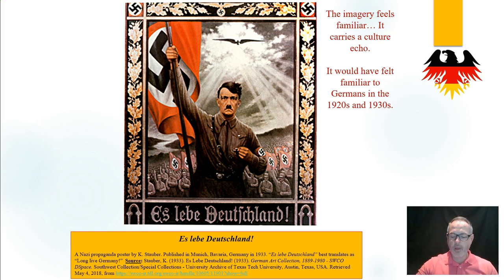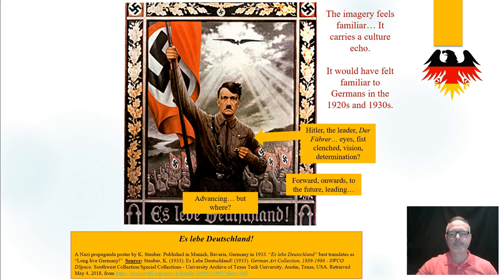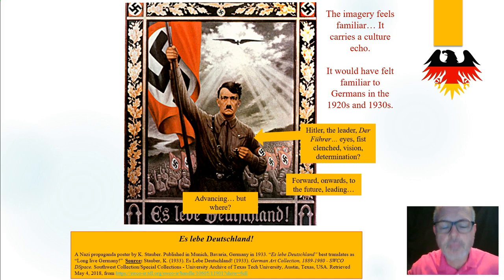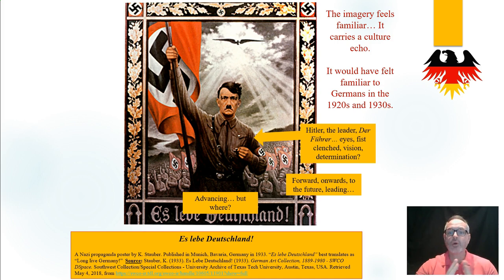Let's pick out the main feature that leaps out at us. It's going to be very familiar to the audience of the time, and our main feature — hopefully you identified it — is Hitler. Now Hitler is clearly the leader here; he's leading a crowd. The leader is the Führer, and we know this becomes his title when he combines the role of Chancellor and President. Look closely at his eyes. His fist is clenched. There's a sense of vision, determination. His jaw is set, his hair is swept by the wind. He's clearly moving forward, advancing closer and closer, leading and pushing forward.